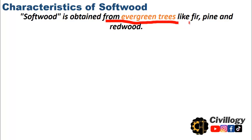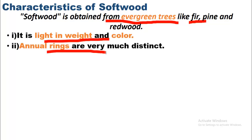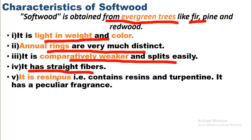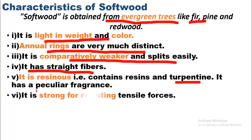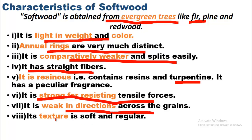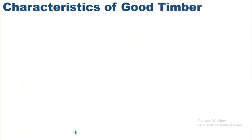Characteristics of softwood: softwood is obtained from evergreen trees like fir, pine, and redwood. It is light in weight and color, and annual rings are very distinct. It is comparatively weaker and splits easily, has straight fibers, and is resinous — meaning it contains resins and turpentine. It has a peculiar fragrance, is strong in resisting tensile forces, but weak in directions across the grain. Its texture is soft and regular. Examples include spruce, deodar, chir, kail, and walnut.